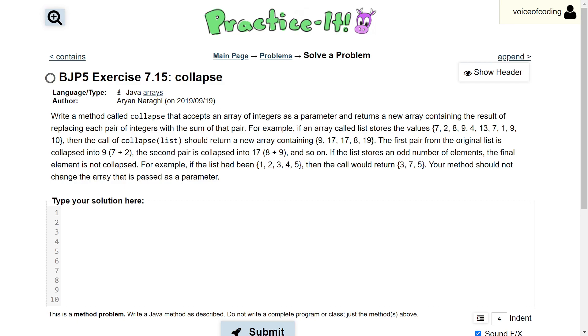For example, if an array called list stores the values 7, 2, 8, 9, 4, 13, 7, 1, 9, and 10, then the call of collapse with parameter list should return a new array containing 9, 17, 17, 8, and 19.